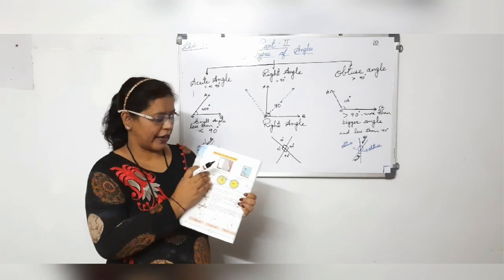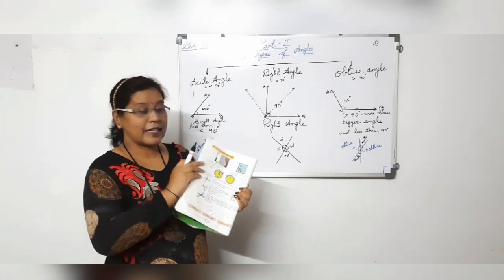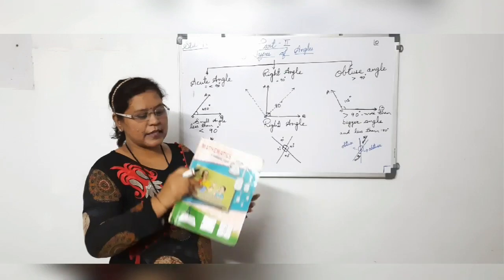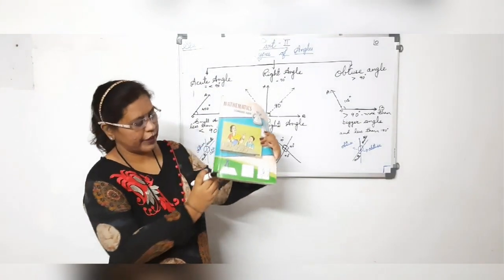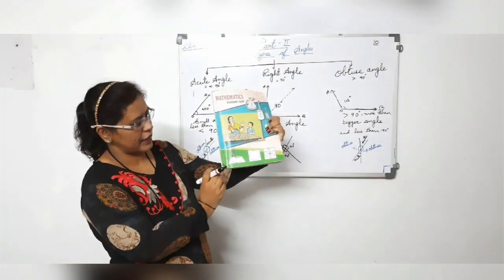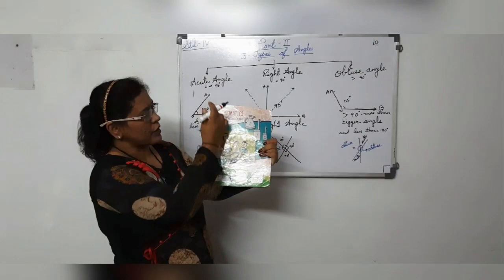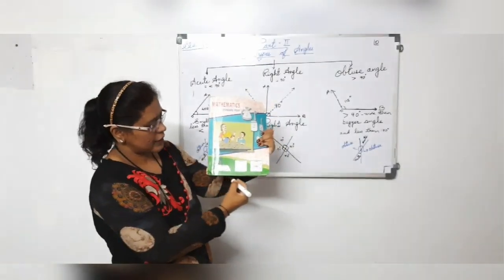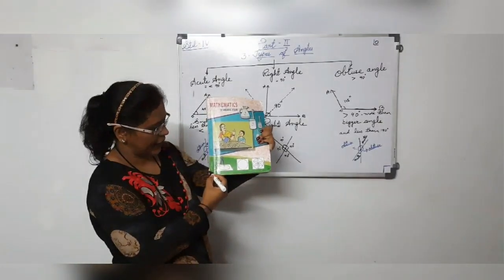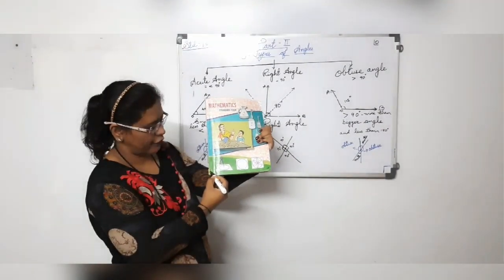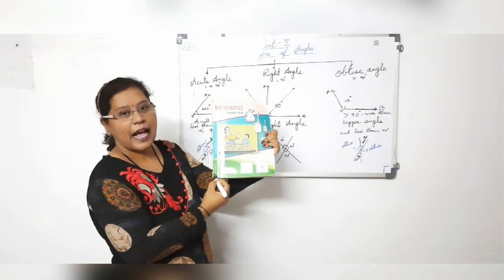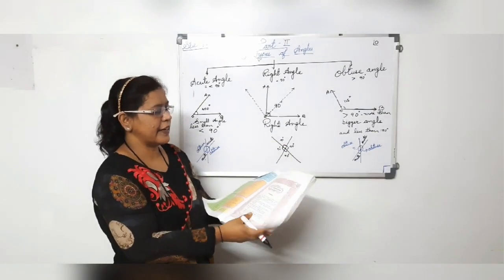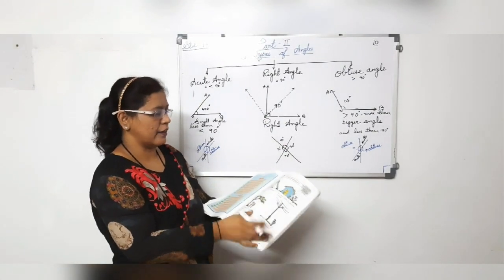Two adjacent sides of a book also form a right angle. This is the side of a book — you can see these are the sides of the book. There is one vertical line and one horizontal line meeting at this side, and this side forms an angle. So this book consists of a right angle.